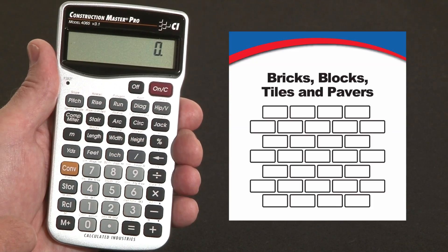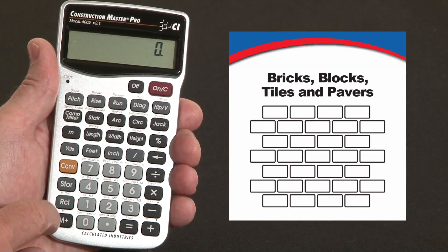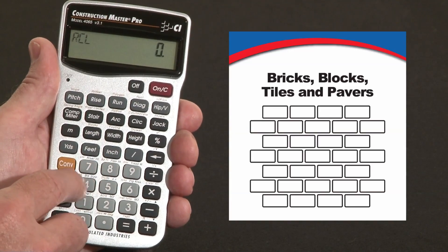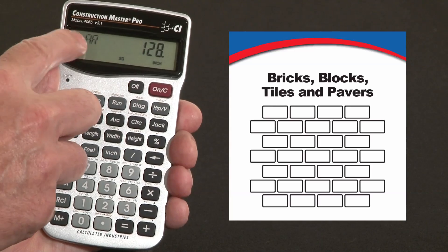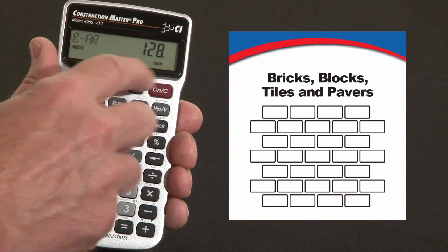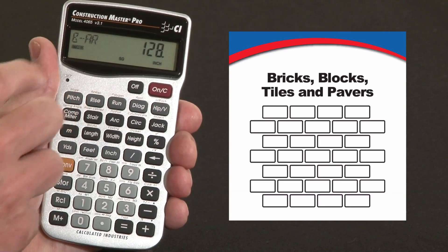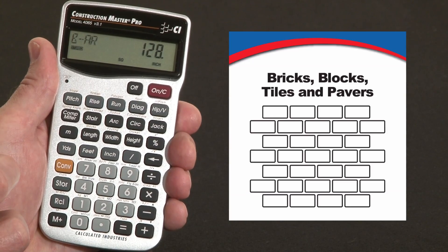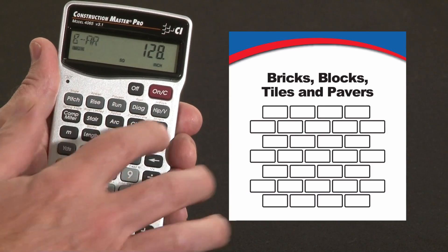The concrete block function is based on an 8x16 common concrete block. You can check that by hitting recall above the length key where it says blocks. In this instance we're going to hit the 4 key because the block area says 128 square inches and that's stored. That's the default size of blocks for the function. You can change that to whatever you like but for this example we're going to leave it as an 8x16 concrete block.